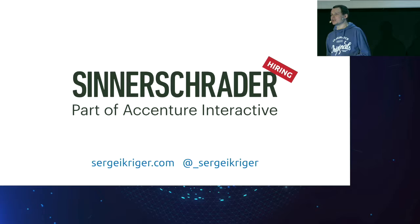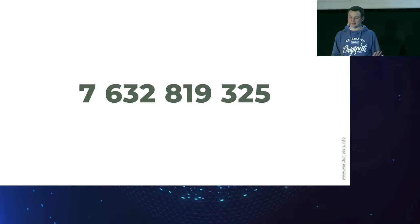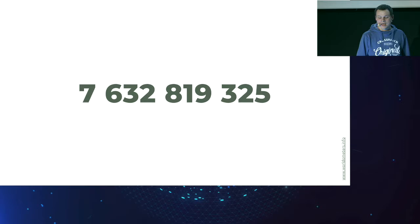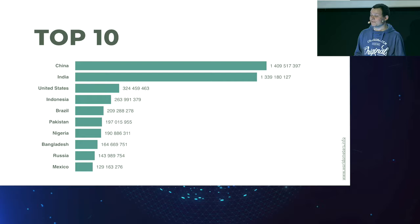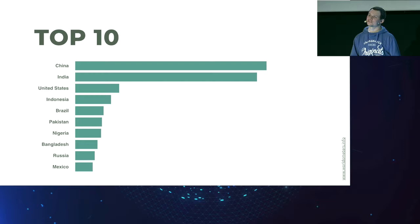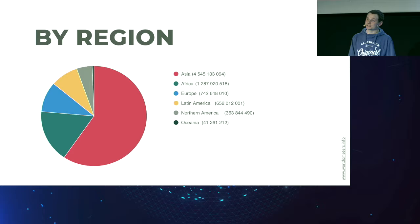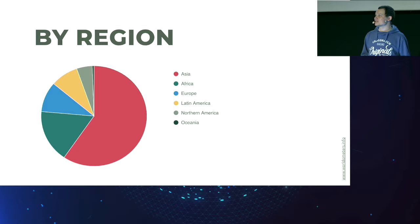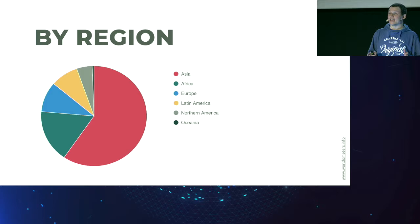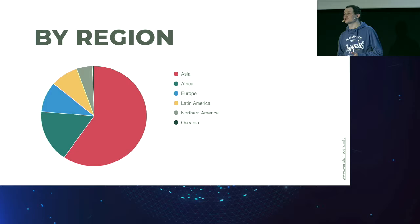Do you know how many people live in the world right now? Here is statistics on the top ten countries by population. If you look at this chart, you can see that technically we don't need to see the numbers to understand that the top two countries — China and India — are living much more people than the rest eight. And here's another statistic also by population, but in different world regions. With no numbers, it's clear that more than half the people in the world are living in the Asian region.